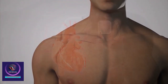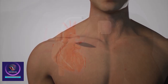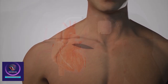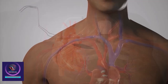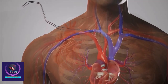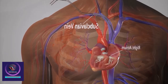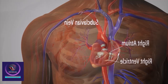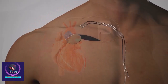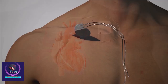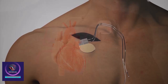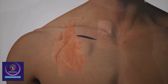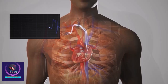To implant a pacemaker, a surgeon makes a small incision beneath the patient's clavicle. Then, guided by x-ray images on a video screen, the surgeon inserts the pacemaker leads into the subclavian vein and threads them towards the heart until one reaches the right atrium. If a second lead is used, the surgeon continues threading it until it reaches the right ventricle. After testing the leads to make sure they're working properly, the surgeon connects them to the pulse generator, then places the generator in a small skin pouch created below the clavicle. Finally, the surgeon closes the incision.